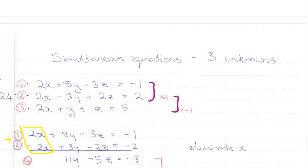2x minus 2x is 0, 8y plus 3y is 11y, minus 3z minus 2z is minus 5z, and minus 1 minus 2 is minus 3. Here we have a new equation in y and z.